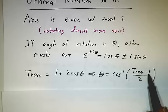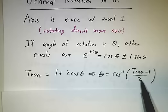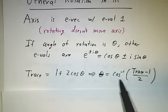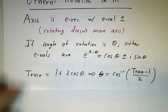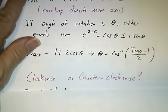That means the trace is going to be 1 + 2cosθ, which means you can recover θ from the trace: take the trace, subtract 1, divide by 2, then take the inverse cosine. That gives you the angle of rotation, but it doesn't tell you whether you're rotating clockwise or counterclockwise.